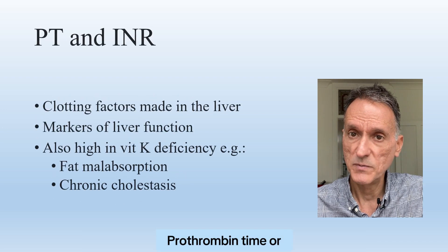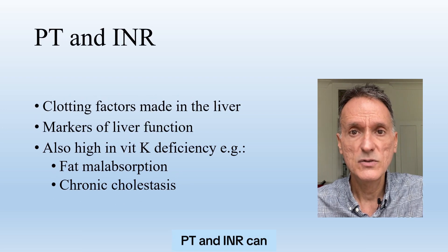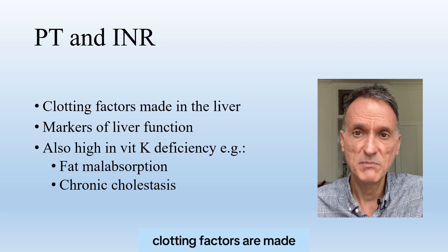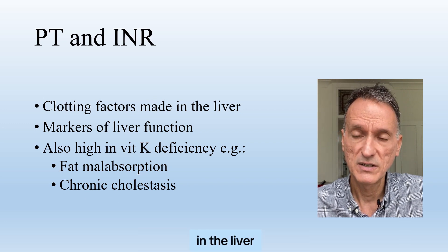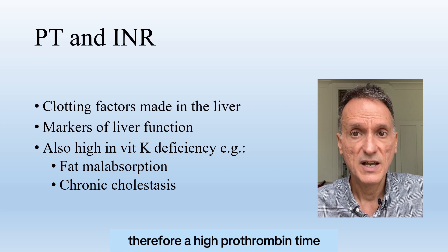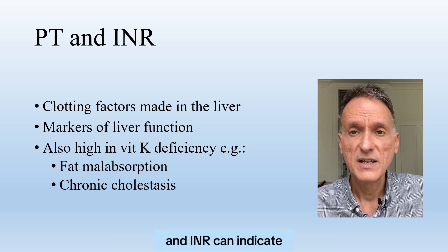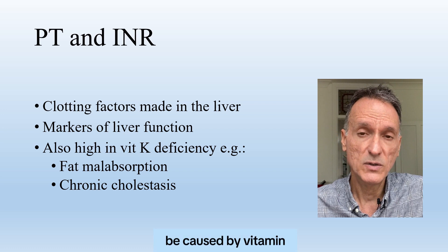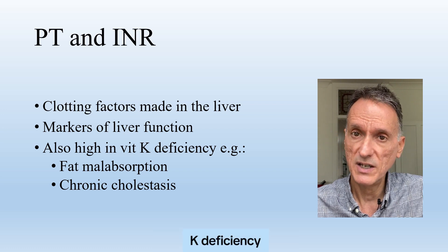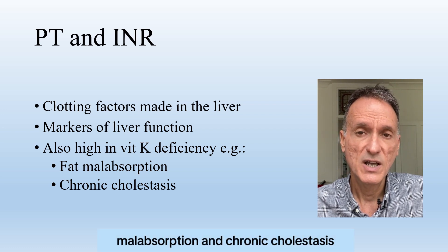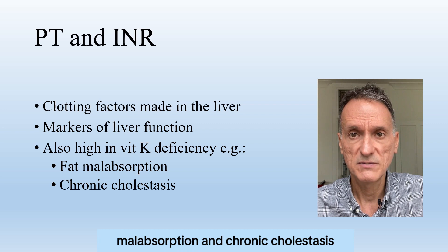Prothrombin time, or PT, and INR can also be used to measure liver function, as the underlying clotting factors are made in the liver. Therefore, a high prothrombin time and INR can indicate liver dysfunction, but it can also be caused by vitamin K deficiency, as seen in fat malabsorption and chronic cholestasis.